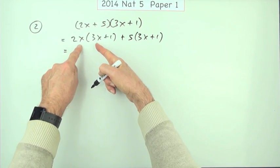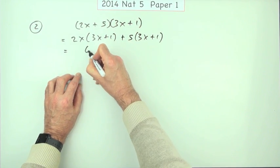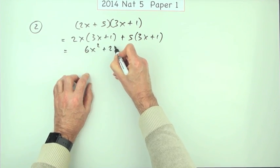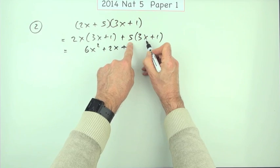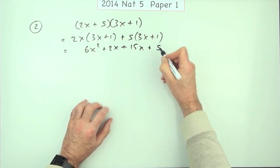So now I've got four multiplications. 2x times 3x, numbers first, coefficients, 6 times x squared, x times x. 2x times 1, plus a 2x. 5 times 3x, 5 threes are 15, coefficients, plus 5 ones are 5.